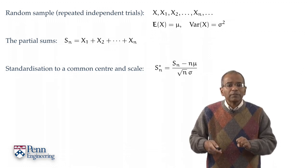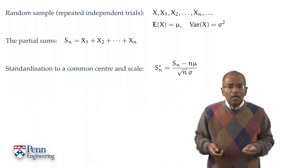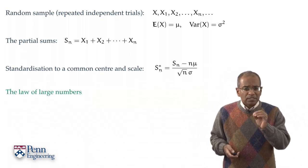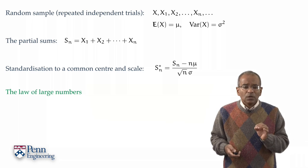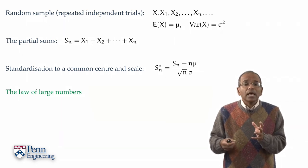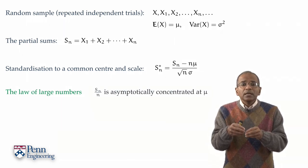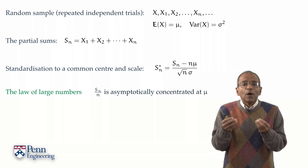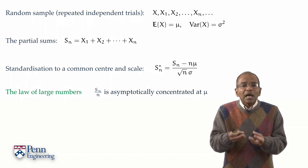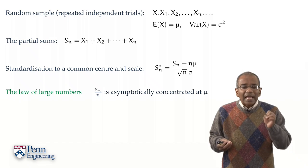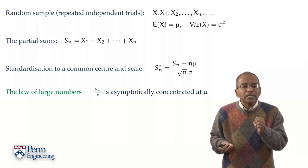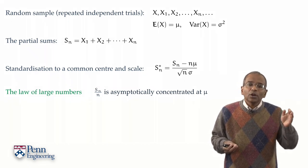Let's begin. Then what can we say about these sums and these standardized sums? The law of large numbers, which is the heart of the theory of probability, says that the relative frequency, Sₙ over n, the sample mean, is asymptotically concentrated at its expected value, μ.